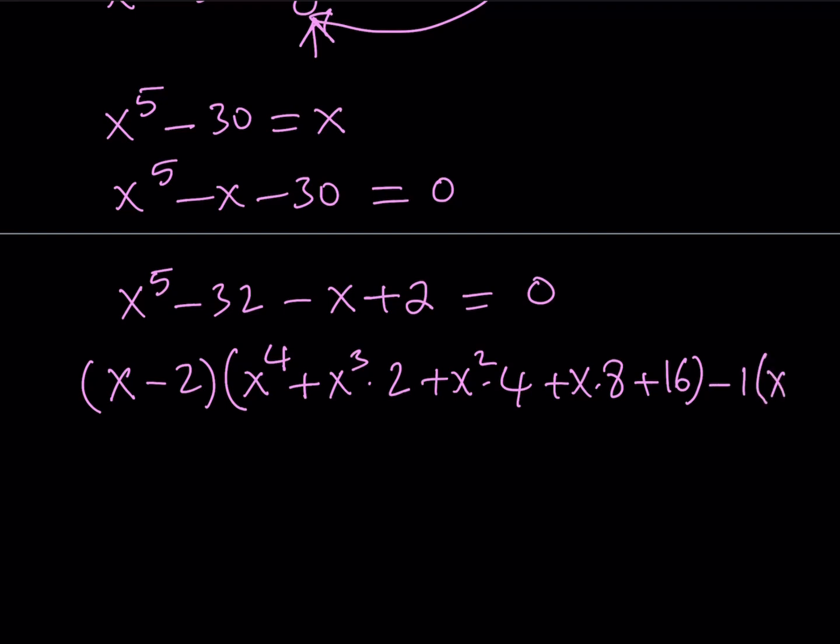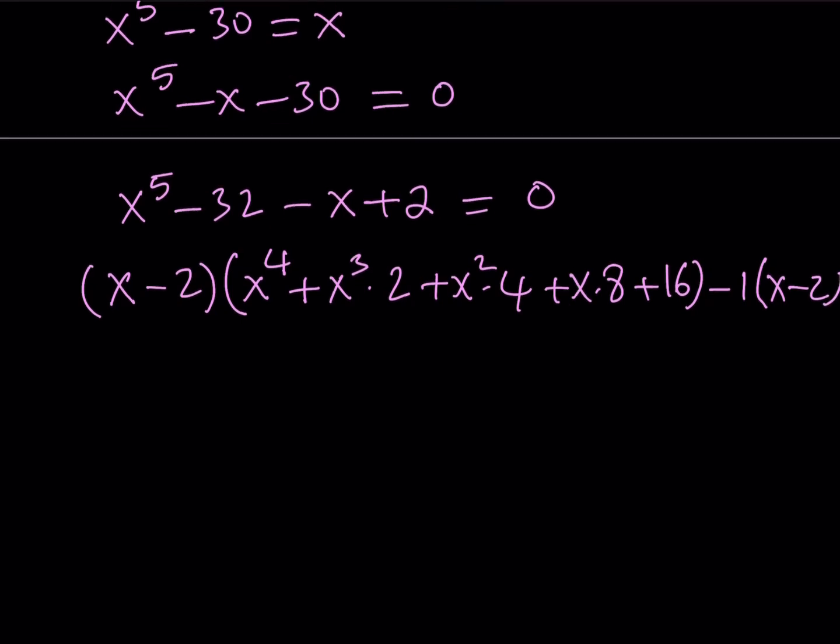So we have a common factor and this is equal to 0, of course. So let's take out x - 2 and that should give us x^4 + 2x^3 + 4x^2 + 8x + 16 - 1. That's going to give you plus 15 equals 0.